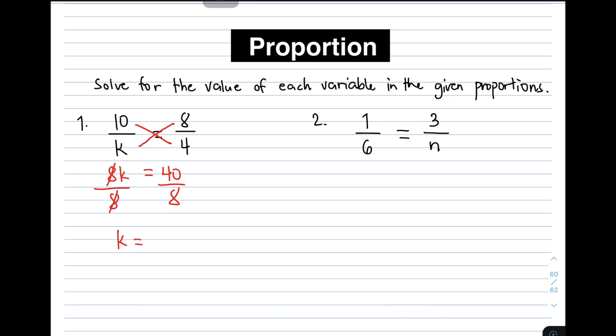Then on the other side of the equation, we need to divide 40 in 8. And 40 divided by 8, it will give you 5. Therefore, the value of the variable k is 5.